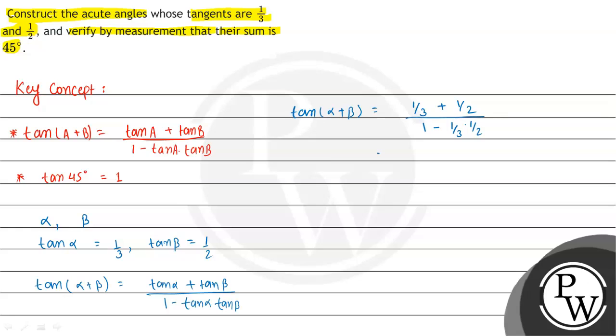Solving the numerator, we will get 5/6 divided by 1 minus 1/6. If we solve the denominator part, this also will be 5/6. These cancel, so we will get tan(alpha plus beta) equal to 1.